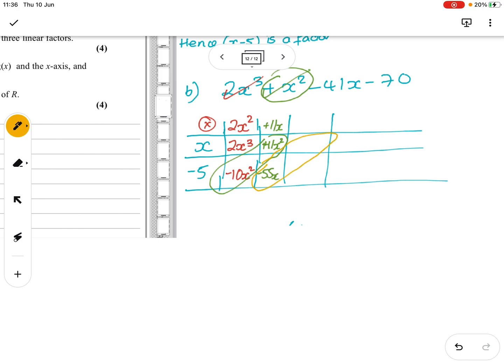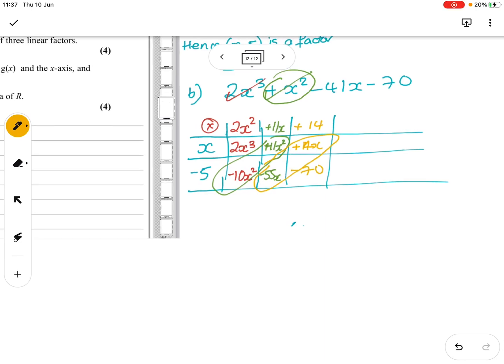Right, so I want to have -41. I'm on -55, so I need to add another 14x. So I need to multiply by 14. 14 times 5 is -70. So brilliant, I've got my -41, and I've got my -70.